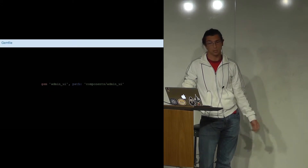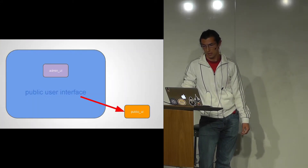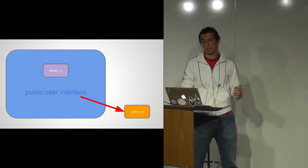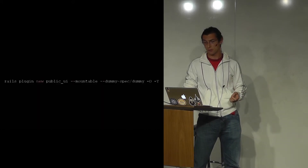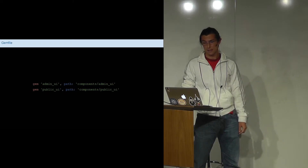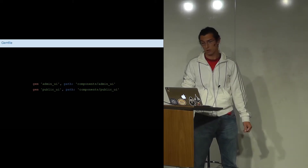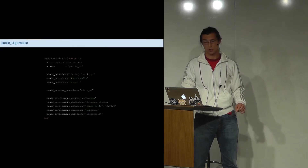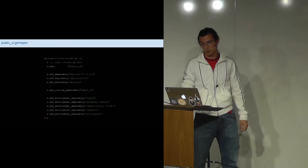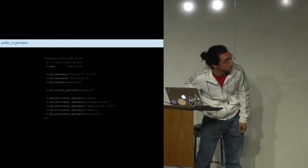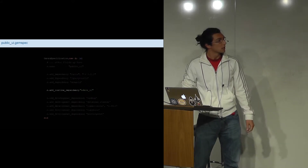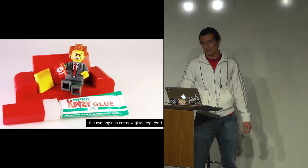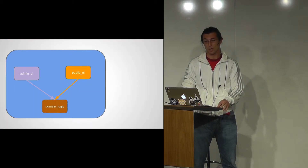The Gemfile of the main application is updated to include the admin-UI engine. With the main application running fine depending on admin-UI, I started moving the public interface into its own engine — similarly moving the feature specs first. The main application now relies on the two engines, and the public-UI engine depends on admin-UI because of the shared UI and domain logic. You can see in the gemspec inside public-UI the require dependency on admin-UI.